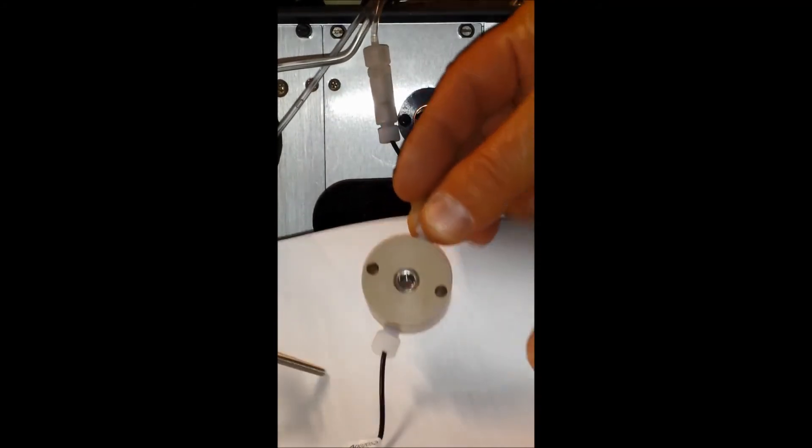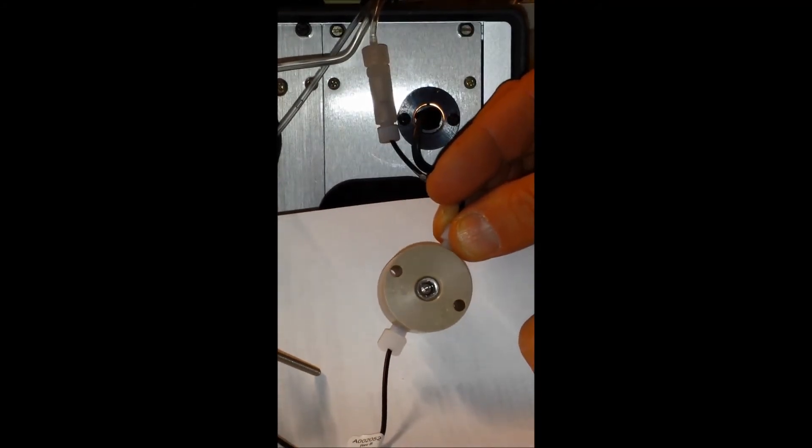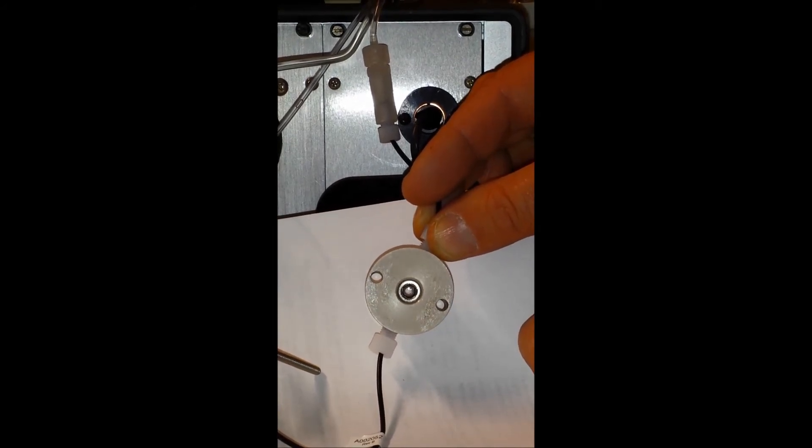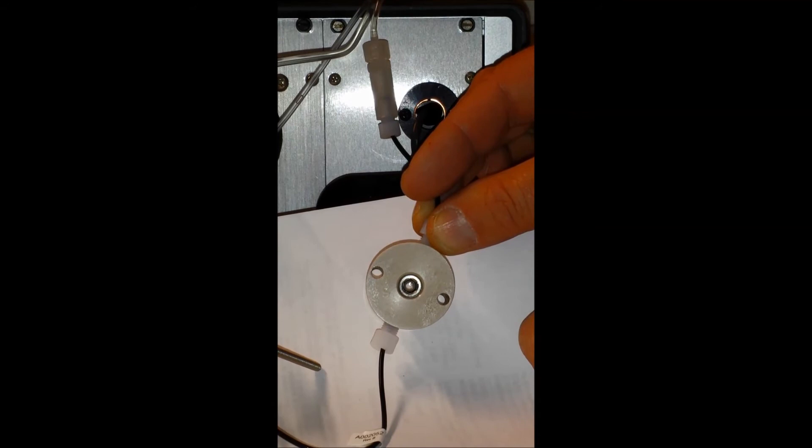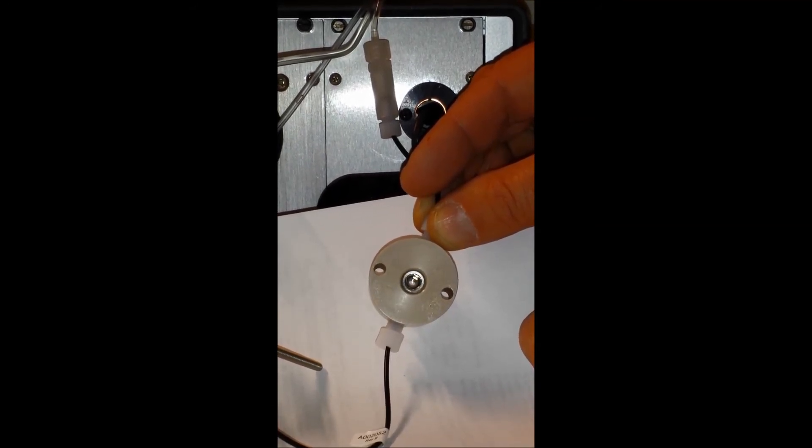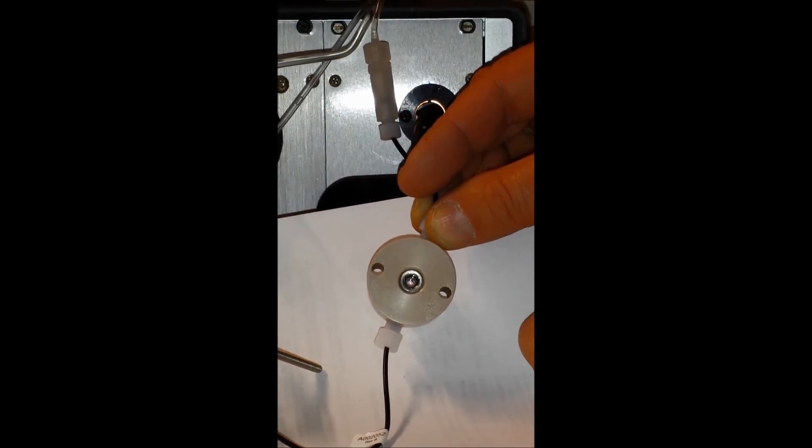You can also use a 10 or 40x sight glass or shine a flashlight through there to see if there's some problem obstructing the light.